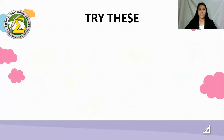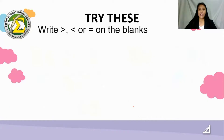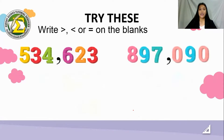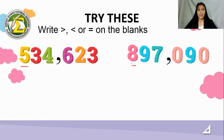Now let's try more by writing greater than, less than, or equals on the blanks. We have 534,623 and 897,090, both in the hundred-thousands place value. We need to compare the highest digits — five and eight. Our hungry alligator wants to eat the most fishes, so we can read this as: 534,623 is less than 897,090.